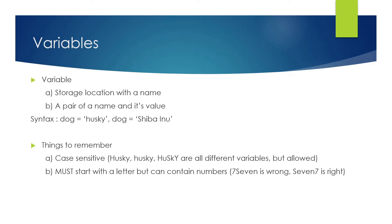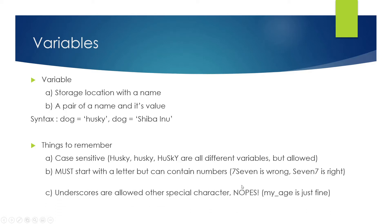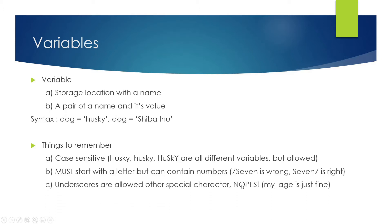The second thing you should keep in mind is that a variable name must start with a letter but can contain numbers. For example, starting with a number is wrong, but starting with a letter and having a number come inside — like between characters — is perfectly fine.